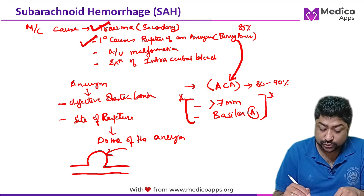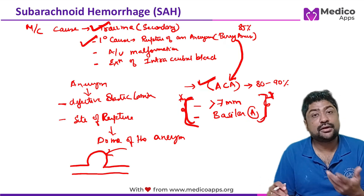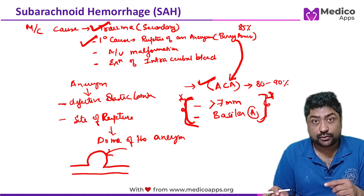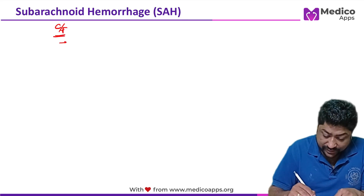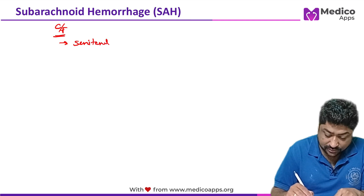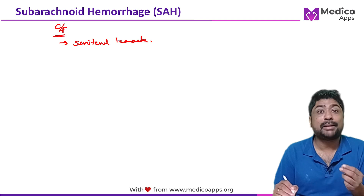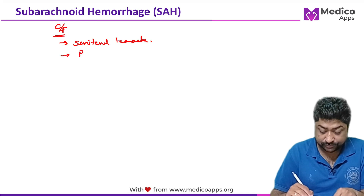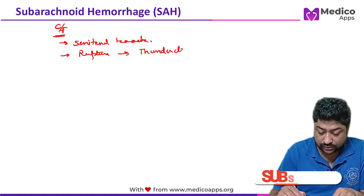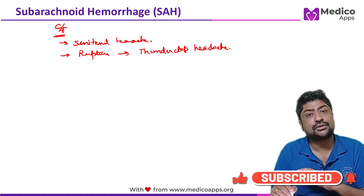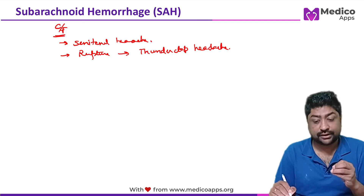To summarize what we know: the most common cause, most common primary cause, most common artery involved, high-risk factors for rupture, the underlying defect in aneurysms, and which part generally bursts. Now, how do these patients present? There can be sentinel headaches — excruciating headaches lasting seconds to minutes that then resolve, representing micro-leaks. When the actual rupture happens, the patient describes a thunderclap headache — the worst headache of their life, as stated in the question.